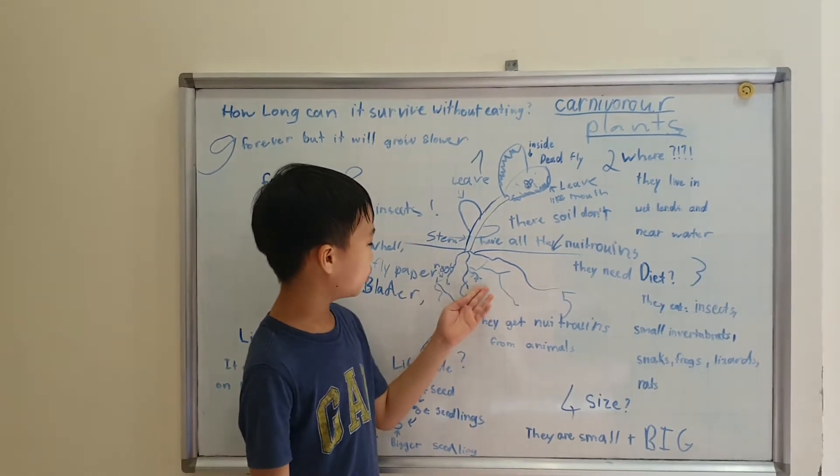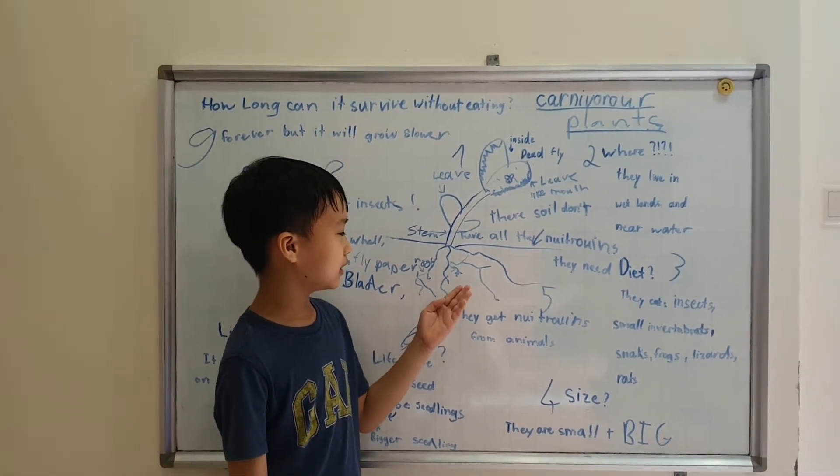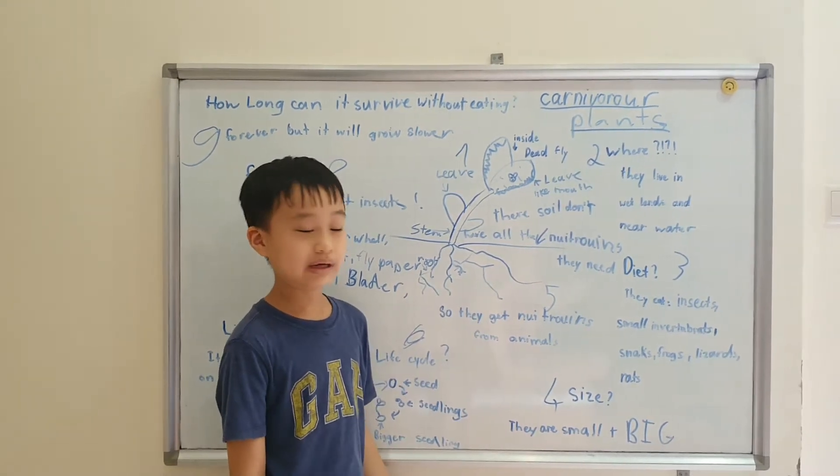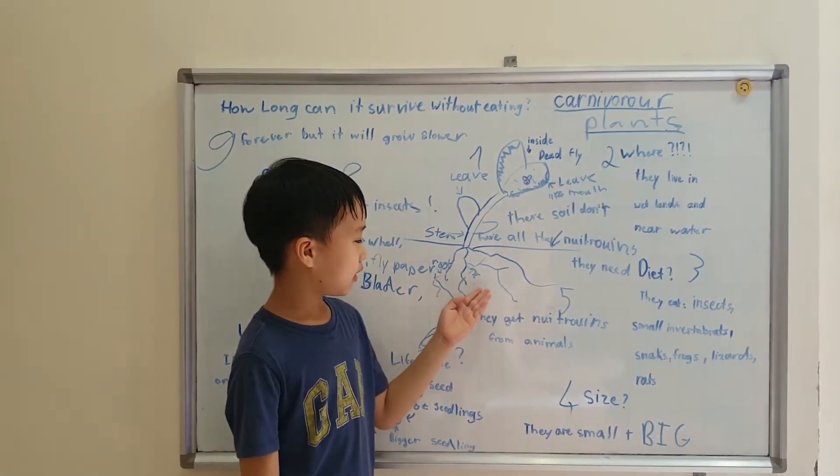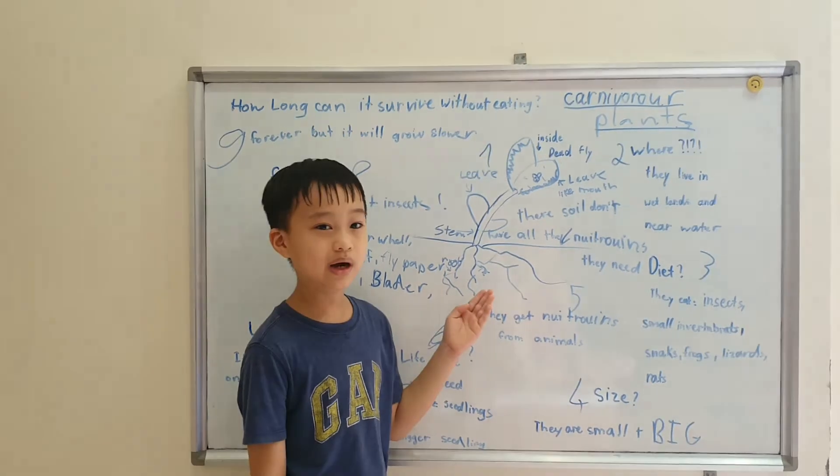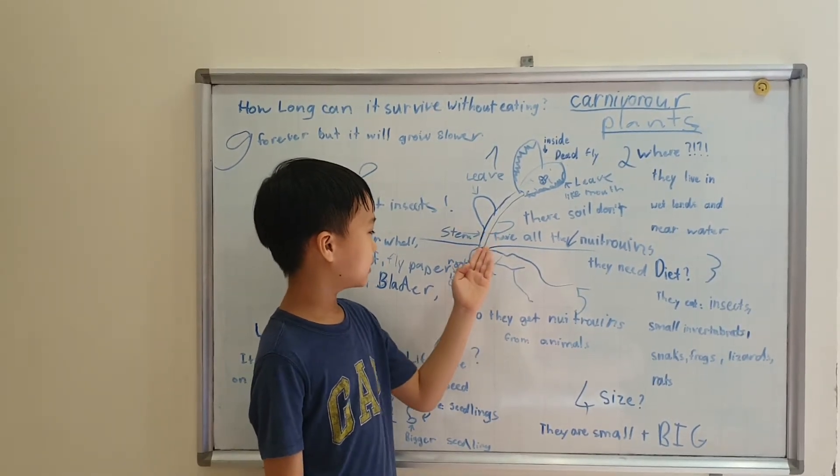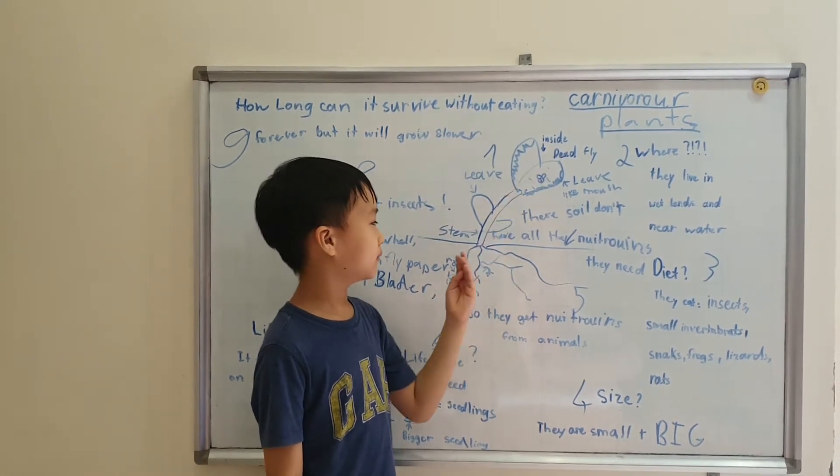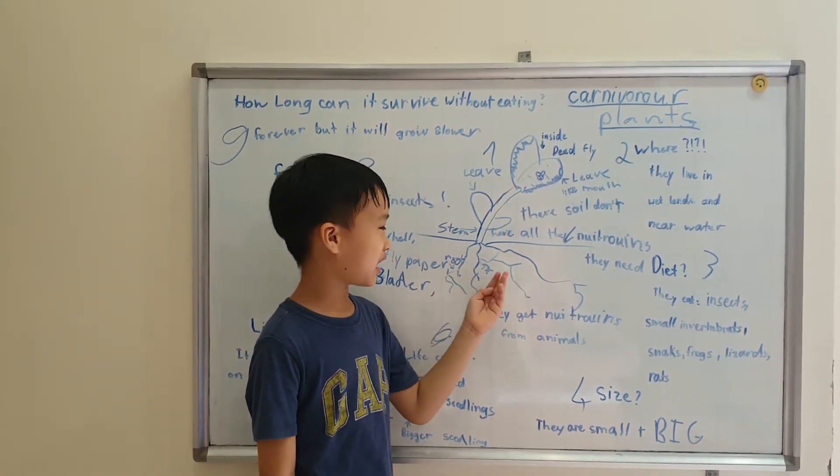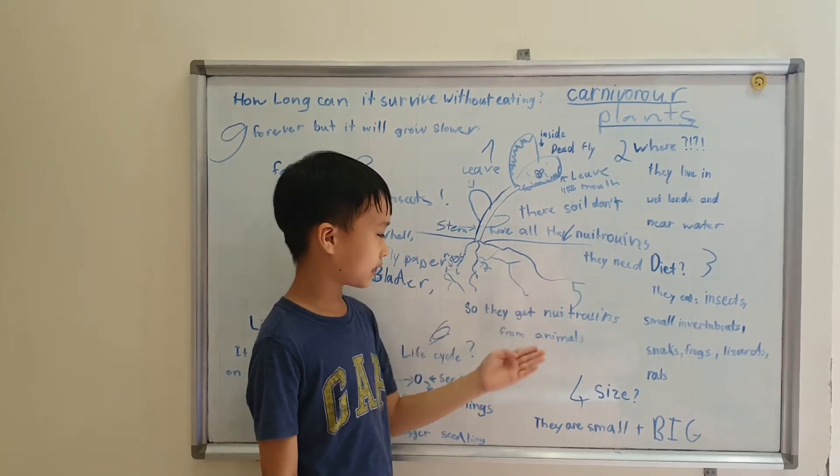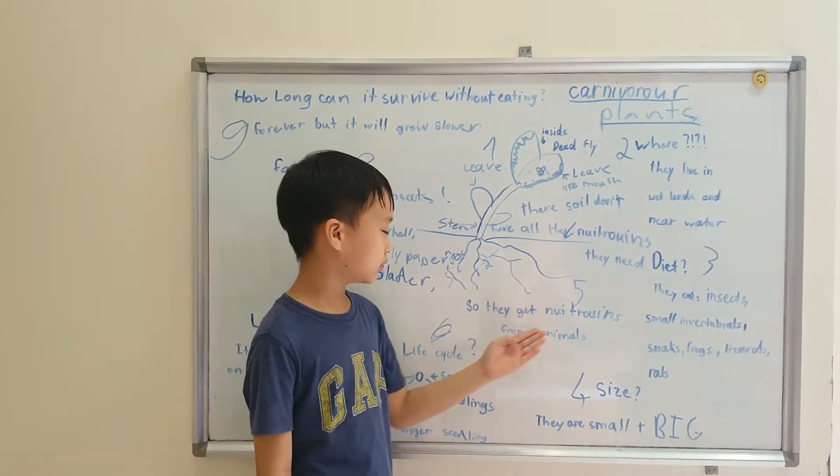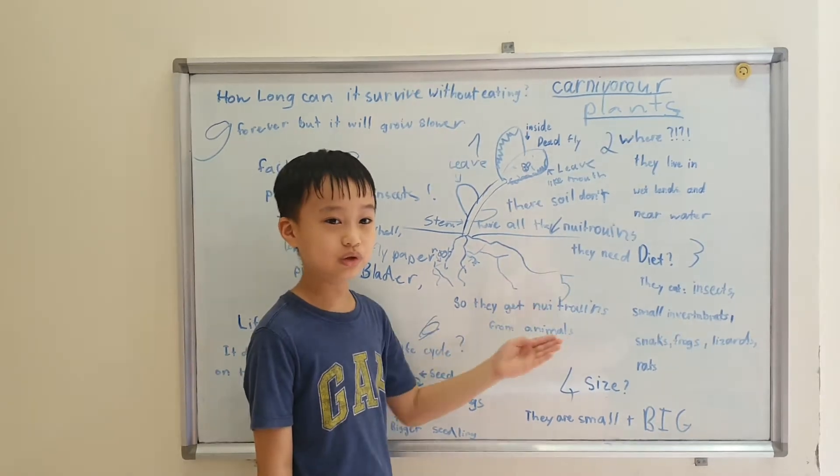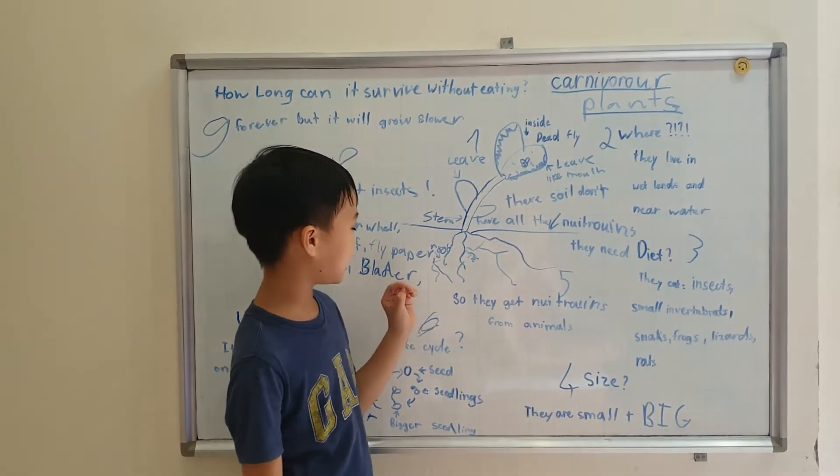The roots are underground where you cannot see. They collect water. The stem carries the water up to the mouth, but they cannot absorb much water because the water has less nutrients, not all the nutrients they need.